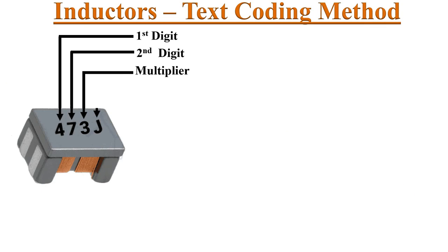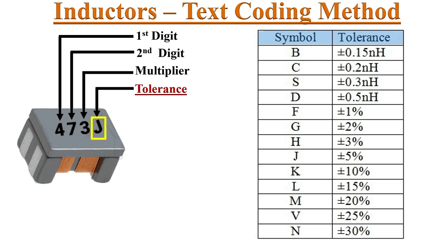Sometimes we can see a special marking code on inductors: three digits with one alphabet letter. The fourth character shows the tolerance of the inductor. The following table shows the tolerance for inductors indicated with letters.